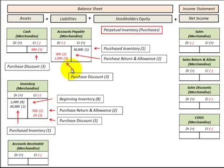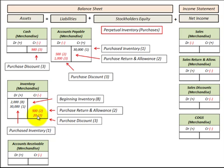Now let's make a payment against accounts payable of $1,000 and take a purchase discount. We reduce accounts payable by $1,000. The purchase discount is 2%, so we reduce the inventory account by $20, and the balance goes into cash — we pay out $980.